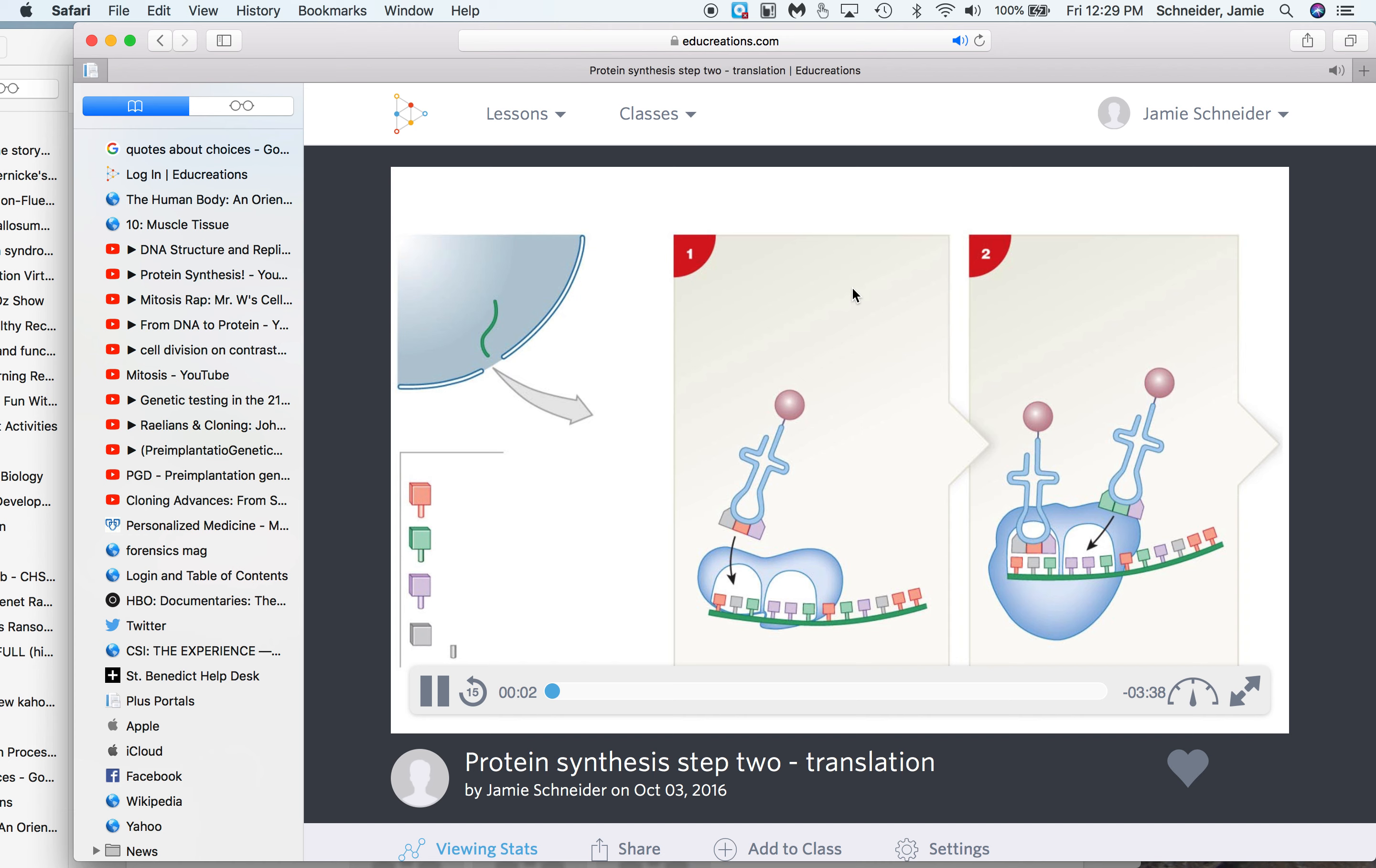This lesson is about the second phase of protein synthesis or gene expression, called translation. Here I'm going to take an mRNA molecule out of the nucleus, shown here in green. It's going to come out into the cytoplasm. This area designates the cytoplasm, and that's where it happens.